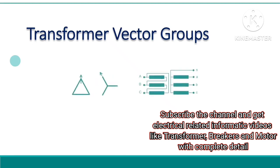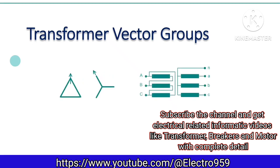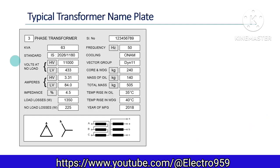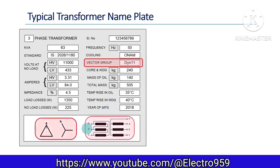In this video, we are discussing vector groups in three-phase transformers. First, have a look at the typical nameplate of a three-phase transformer. The details printed on the nameplate include the KVA rating, the voltage on the primary and secondary sides, the currents, the percentage impedance, the frequency of operation, type of cooling, the weight of the transformer parts, and the possible temperature rise. In addition to all these things, the vector group is also specified — here it is given as dyn11. We also have graphic symbols printed on the nameplate that are related to the vector group designation.